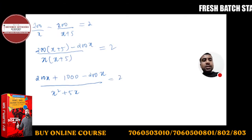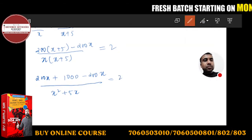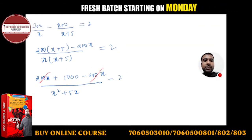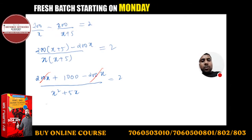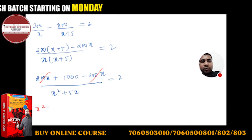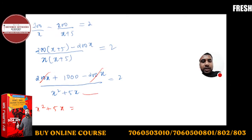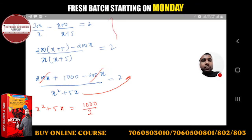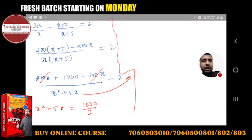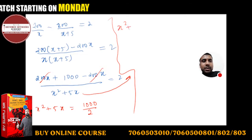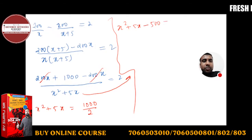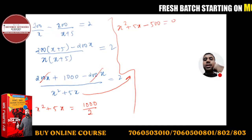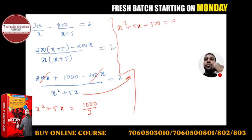After cancellation, the 200x terms cancel out, leaving 1000 equal to 2 times x squared plus 5x. Dividing both sides by 2 gives 500, so the equation becomes x squared plus 5x minus 500 is equal to 0.